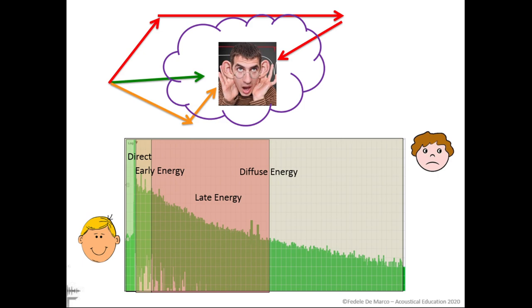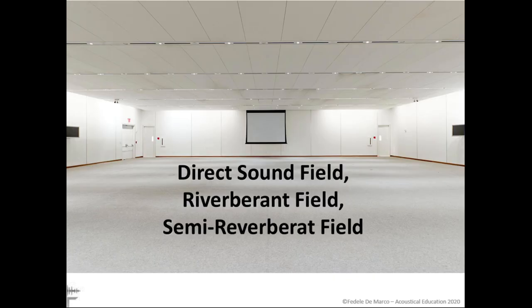Acoustic components characterize our sound experience in every place according to their mutual relationships. In the room impulse response, which represents the signature of the room, we observe all the components of the sound phenomenon with a single shot and a single glance. In a closed environment, the acoustic field can be of three different types: direct sound field, also called improperly free field; reverberant field; and semi-reverberant field.